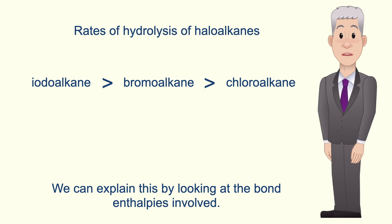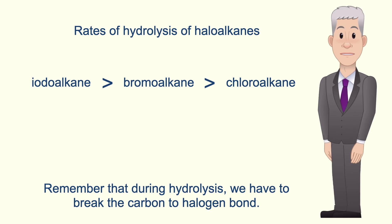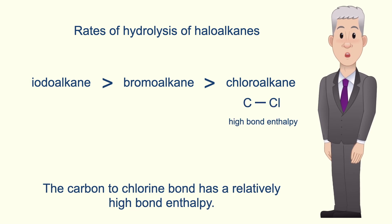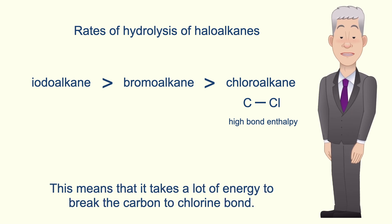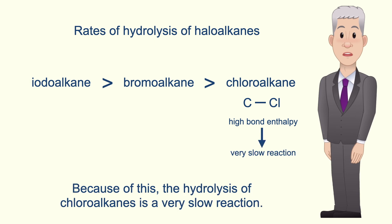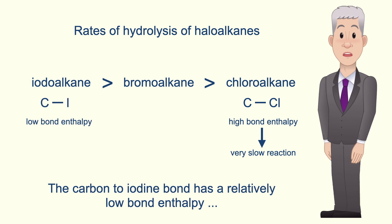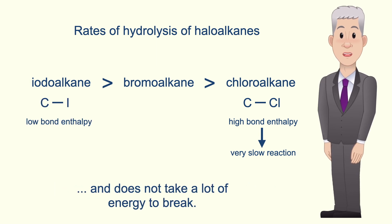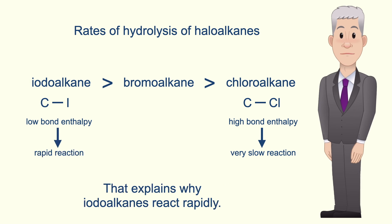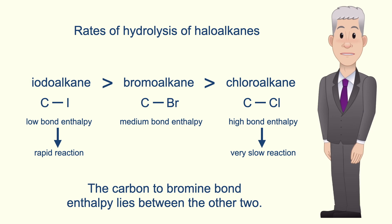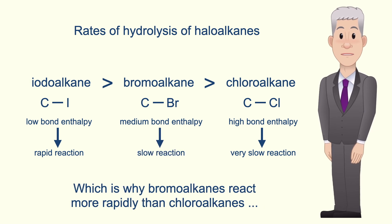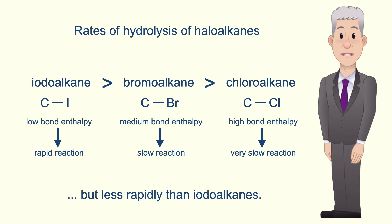We can explain this by looking at the bond enthalpies involved. Remember that during hydrolysis we have to break the carbon to halogen bond. The carbon to chlorine bond has a relatively high bond enthalpy, meaning it takes a lot of energy to break, which is why the hydrolysis of chloroalkanes is a very slow reaction. The carbon to iodine bond has a relatively low bond enthalpy and does not take a lot of energy to break, which explains why iodoalkanes react rapidly. The carbon to bromine bond enthalpy lies between the other two, which is why bromoalkanes react more rapidly than chloroalkanes but less rapidly than iodoalkanes.